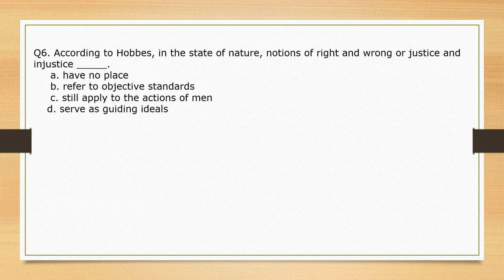According to Hobbes, in the state of nature, no sense of right and wrong or justice and injustice — options: have no place; refer to objective standards; still apply to the actions of men; serve as guiding ideals. The correct option is option A: have no place.